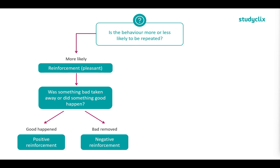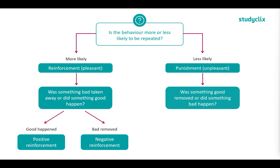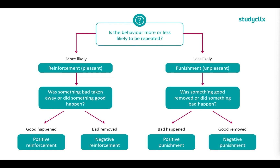Positive and negative here don't mean good and bad. Instead, positive means something is added to the situation, and negative means something is removed. If the behavior is less likely to be repeated, we call this punishment, as it is unpleasant. The next question is: was something good removed, or did something bad happen? If something bad happened, we call this positive punishment; if something good was removed, we call this negative punishment.